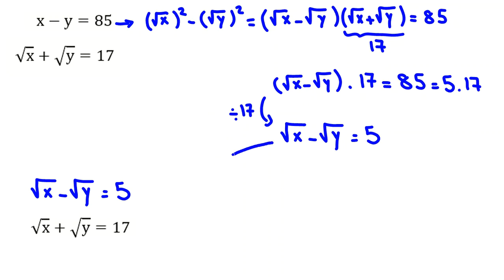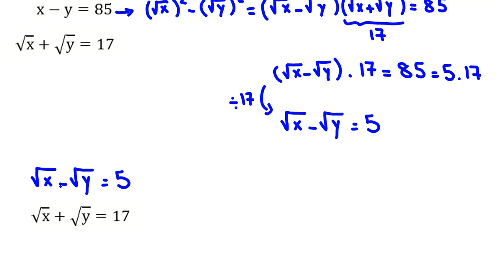Now if I move this equation here, we can solve. If we add these two equations, then 2 root x equal to 5 plus 17 equal to 22. If we divide both sides by 2, root x equal to 11.